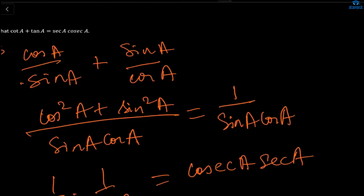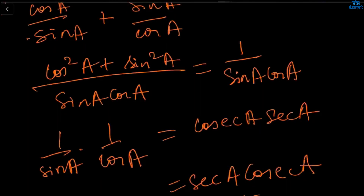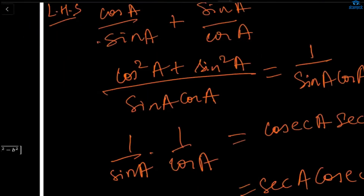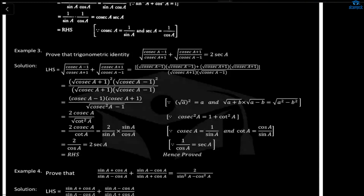When proving identities, try to plan one or two steps in your mind before writing. Sometimes directly substituting doesn't work immediately. Here, writing cotA as cosA/sinA, taking LCM, and getting cos²A + sin²A which equals 1 — I already knew this in my mind before writing. The key is to recognize which identity to use at each step.